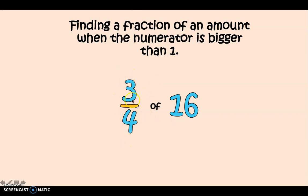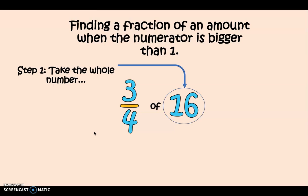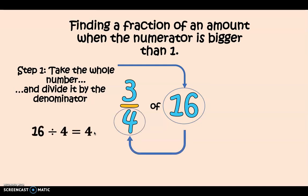But when the numerator is bigger than one there's a two-step process that we can follow. So if we start, first thing we're going to do is we're going to take the whole number here. So the whole number here is 16. Next we're going to divide it by our denominator. So the same as what we would do usually when we're finding a unit fraction of amount. So here's our denominator, 4. 16 divided by 4, as I'm sure you guys know, is going to equal 4.